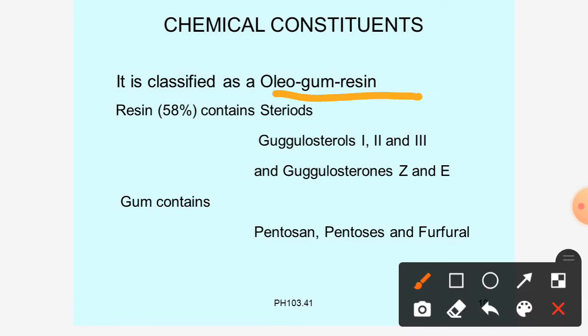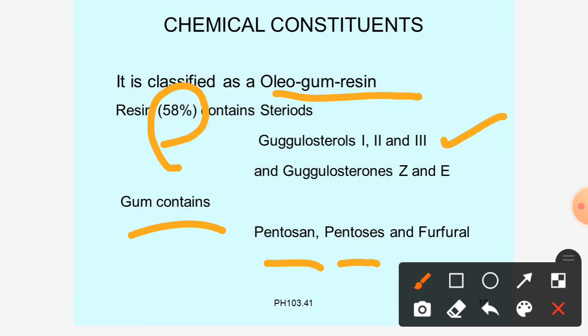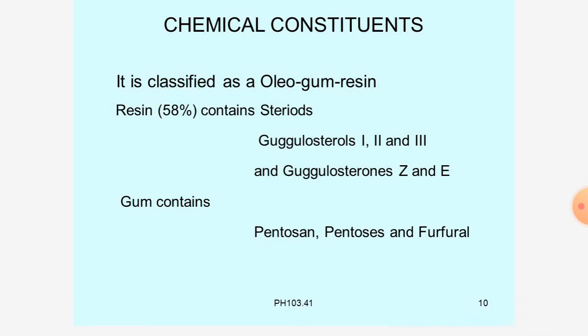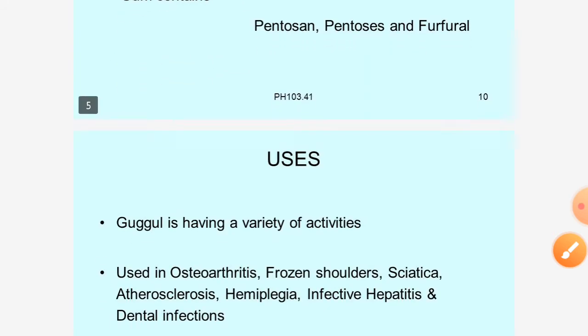For chemical constituents, it contains oleogum resin. The resin is about 58% and contains steroids — specifically Guggulsterol 1, 2, 3 and Guggulsterols Z and E. The gum portion contains Fructose, Galactose, and Furfural. These are the chemical constituents of Guggul.